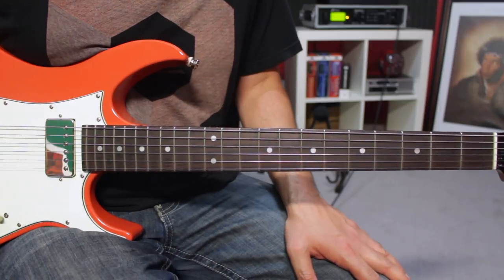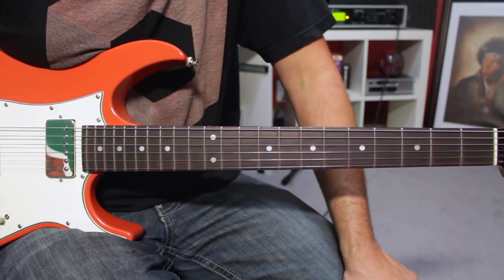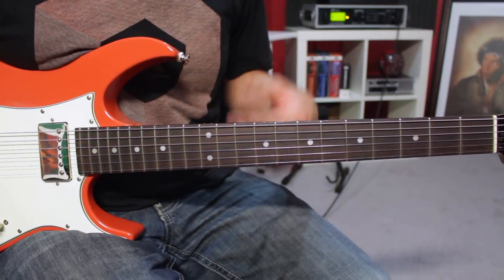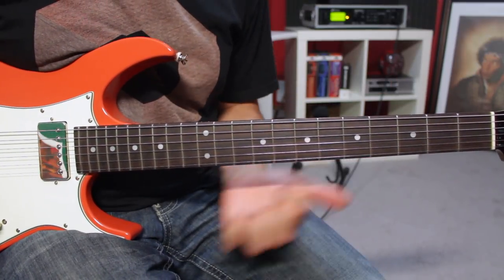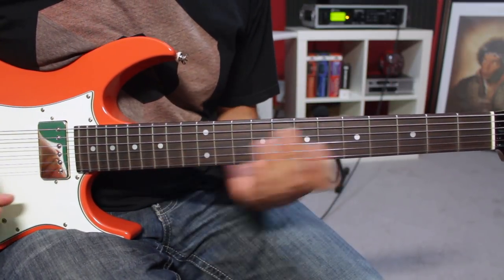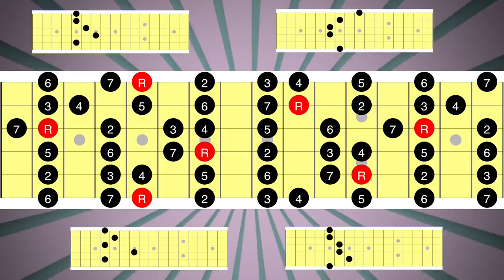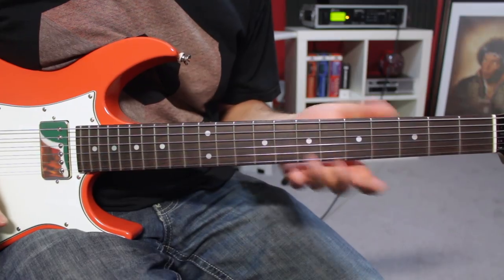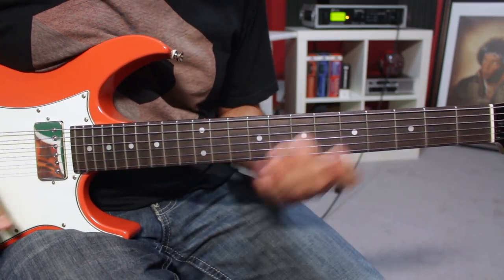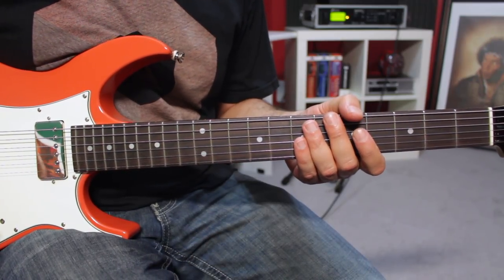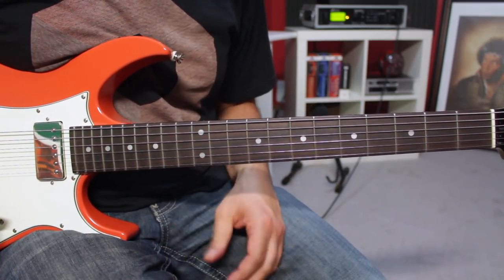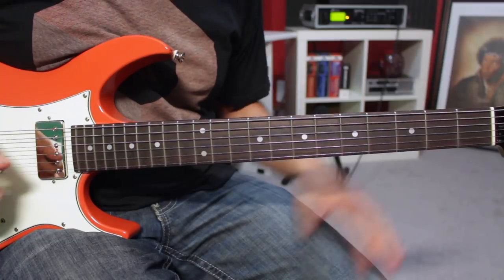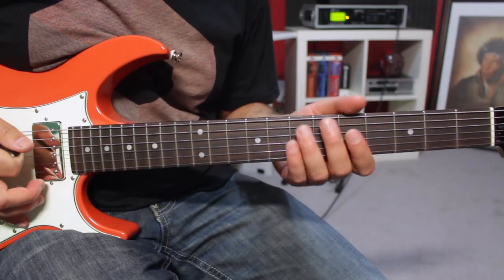Here is the only piece of theory I'm going to give you for this lesson: chords are extracted from scales. So let's say that we have a seven-note scale — we'll pick the major scale.